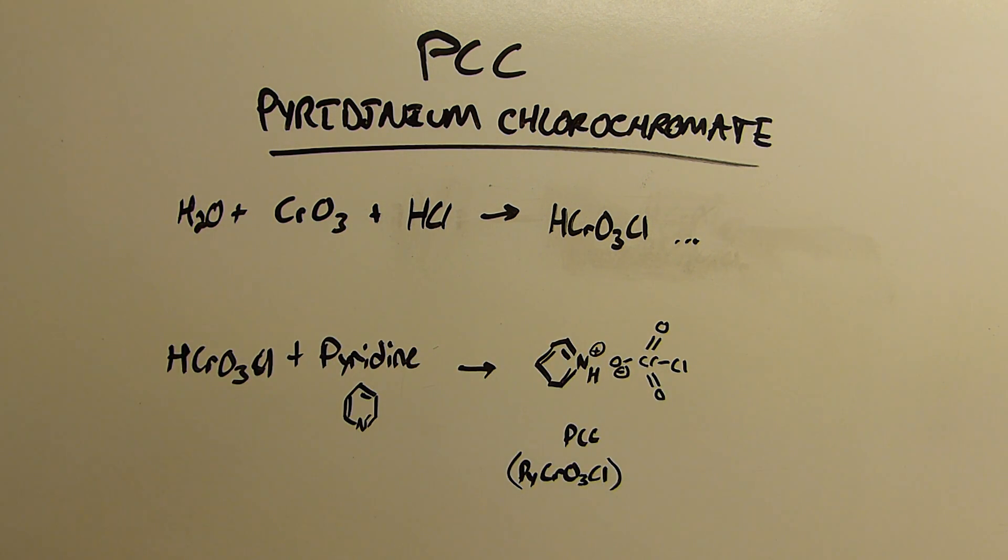Then we'll neutralize that solution with pyridine so this is all in a one-to-one ratio and that will form the pyridinium salt of chlorochromic acid which is pyridinium chlorochromate. This happens to be convenient because it precipitates especially when the solution is cold and then we can filter that off and dry it for future use.